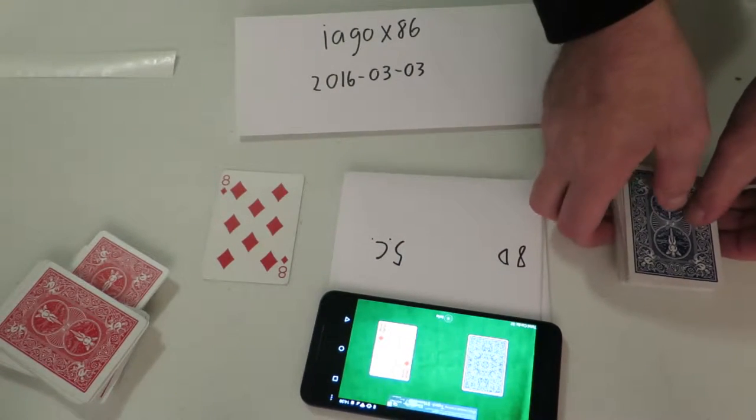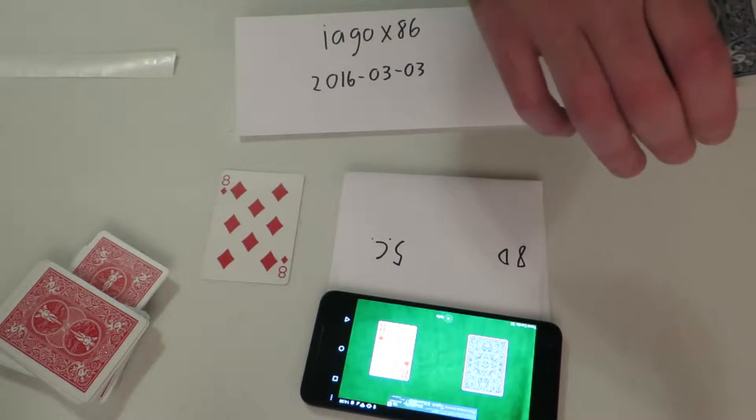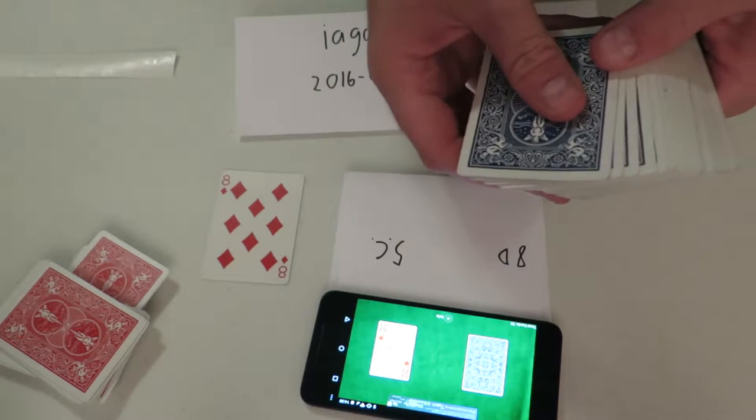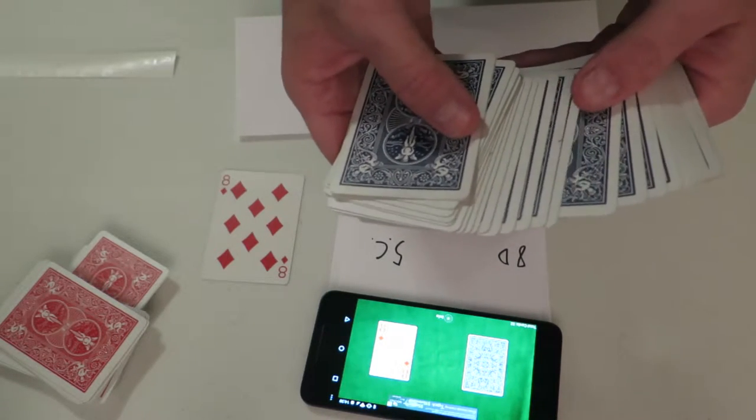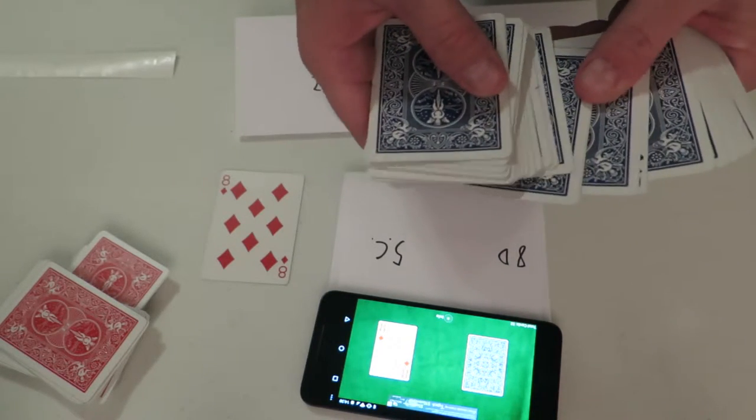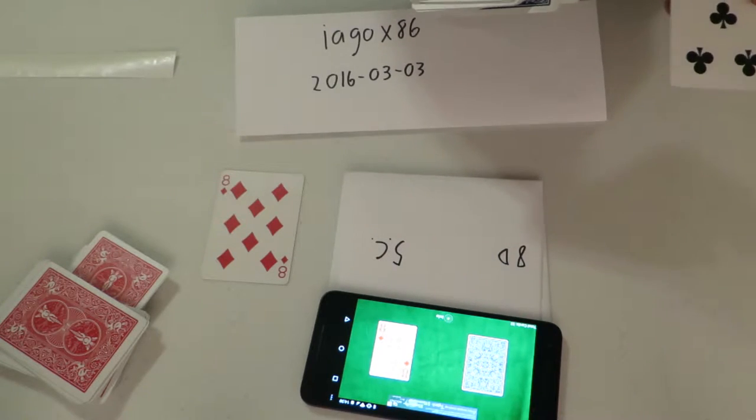Now in this deck, we were supposed to find the eight of diamonds. Let's see if we can find the five of clubs instead. Let's see now. Here it is, the five of clubs is turned over.